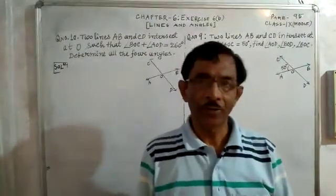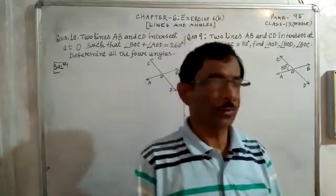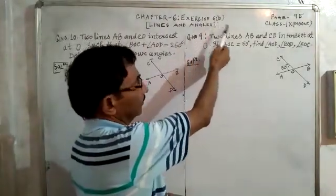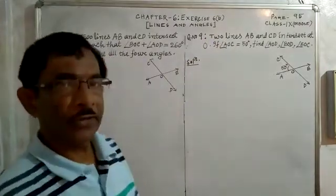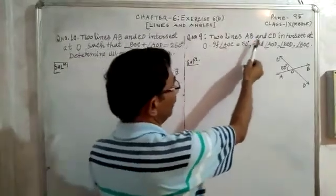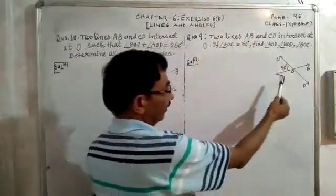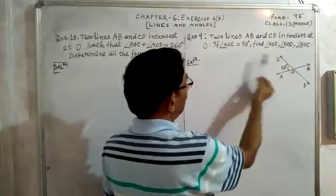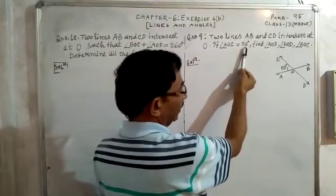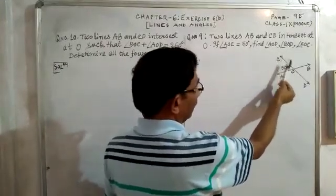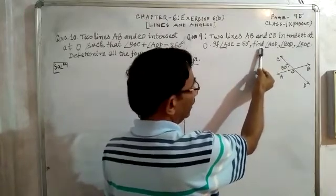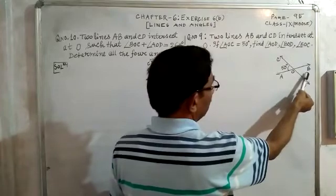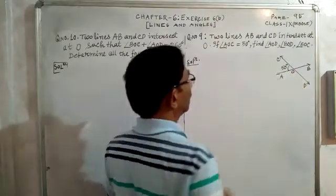Hello dear students, we shall learn question number 9 and question number 10 from exercise 6B of class 9 book. Look at question number 9: two lines AB and CD intersect at O. Angle AOC is equal to 50 degrees. We have to find the value of angle AOD, angle BOD, and angle BOC.